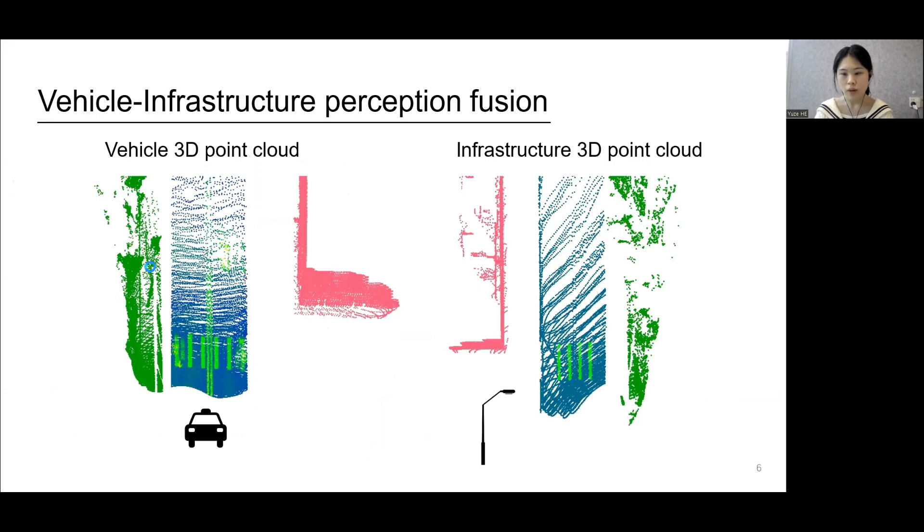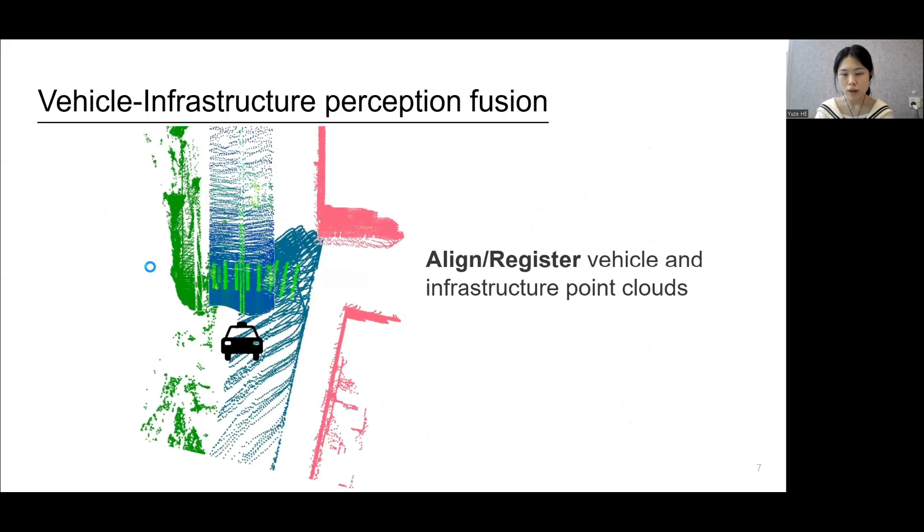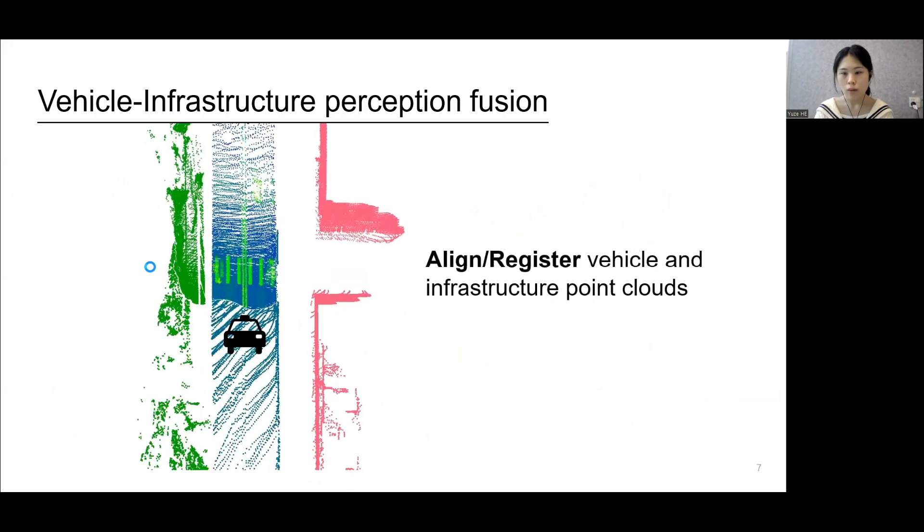In other words, the point clouds from vehicle and infrastructure need to be aligned in the same coordinate system, which is referred to as vehicle infrastructure point cloud registration.